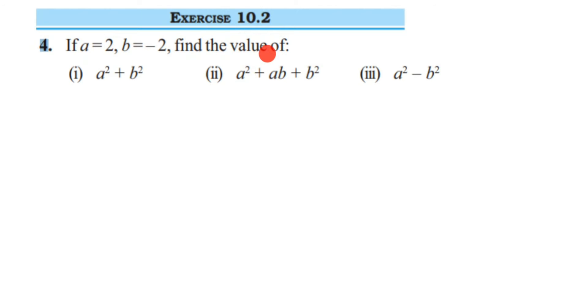We have given three different expressions. In the previous questions from this exercise, we were given only one value - either the value of x or y or p. But here they have given two different values for two different variables, a and b. We have to substitute and get the value of the given expressions.